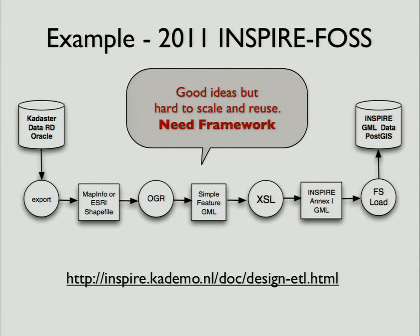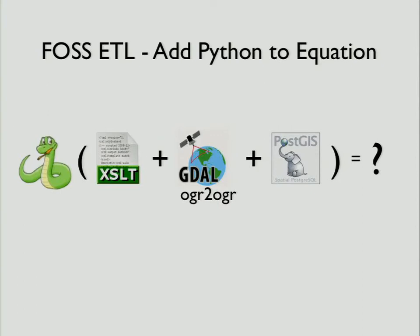This came out of earlier research in some of the INSPIRE projects I did in ESD and Eurogeographics context. Several people are even here in the room, like Frank Anse. What we did was this multi-step approach: we took cadastral data exported into a shapefile or MapInfo, used OGR2OGR to produce a simple feature GML file, translated it via XSLT, generated INSPIRE Annex 1 GML, and then used FSLoader — part of the Degree toolset — to load it into an INSPIRE database. But that was ad hoc, a bit hacky, and it didn't scale up. From that, I thought about how to combine these tools, and the answer is basically: add Python to the equation.